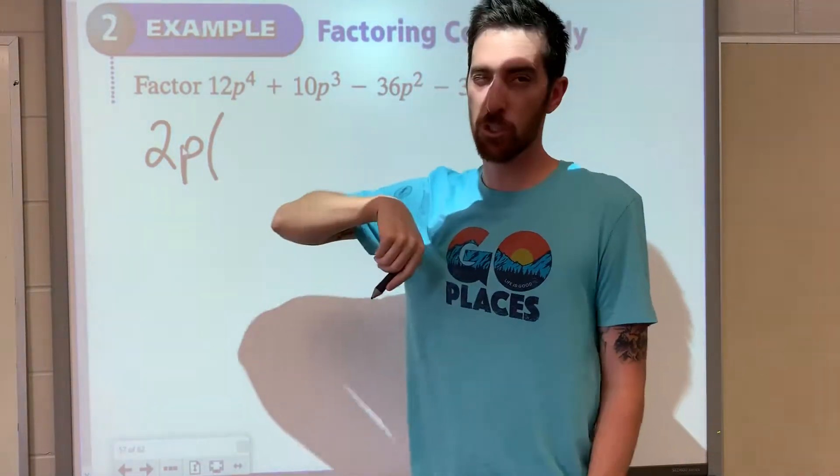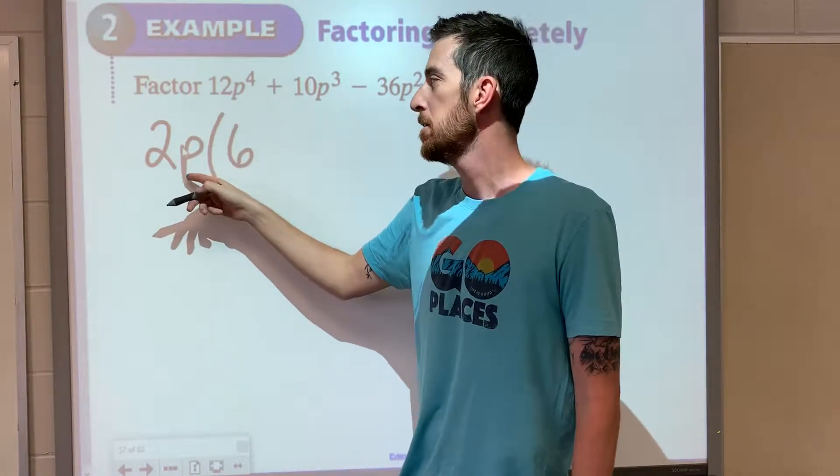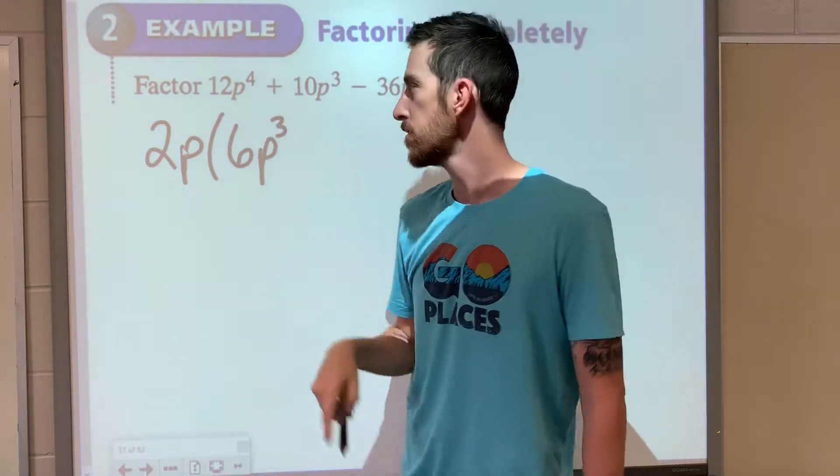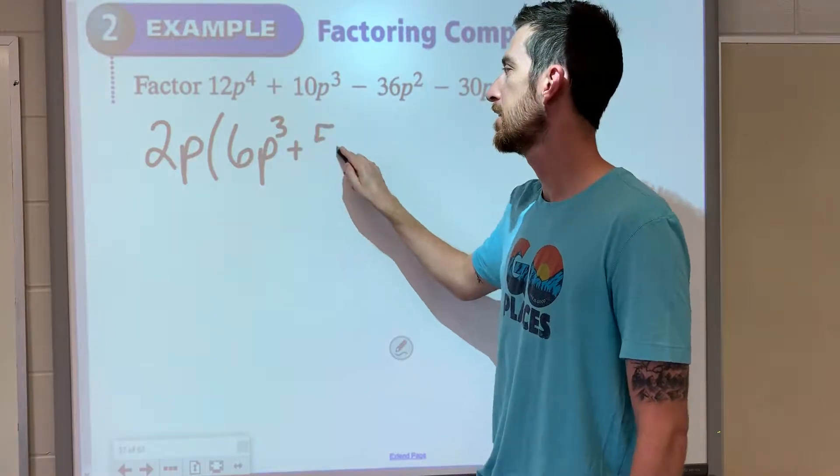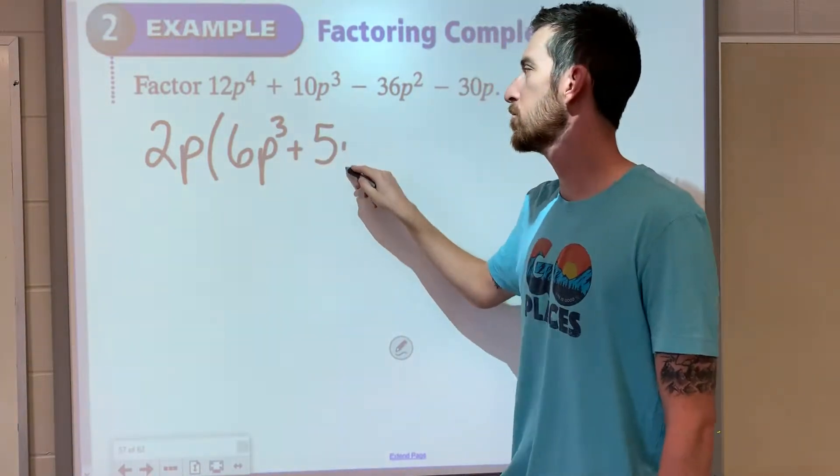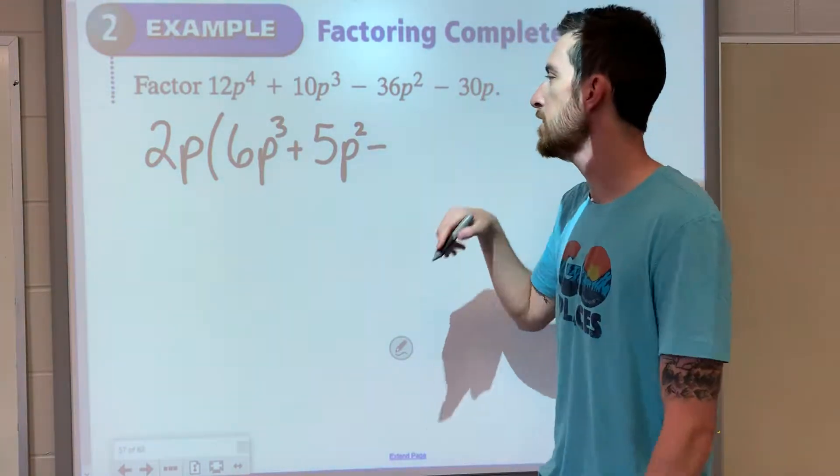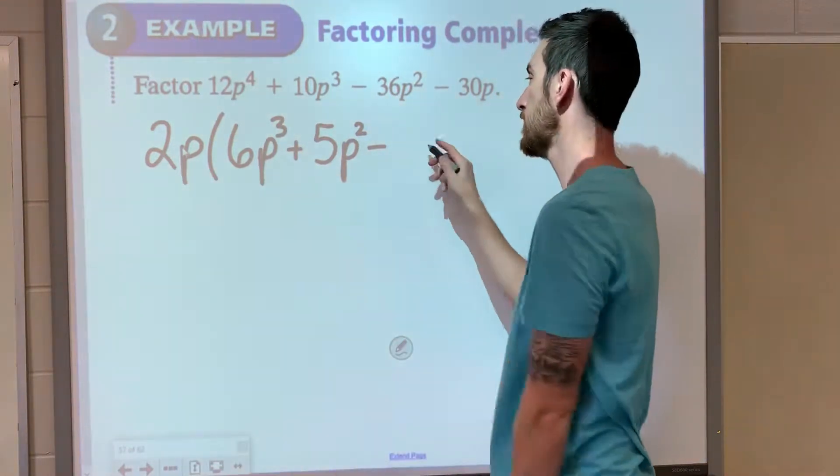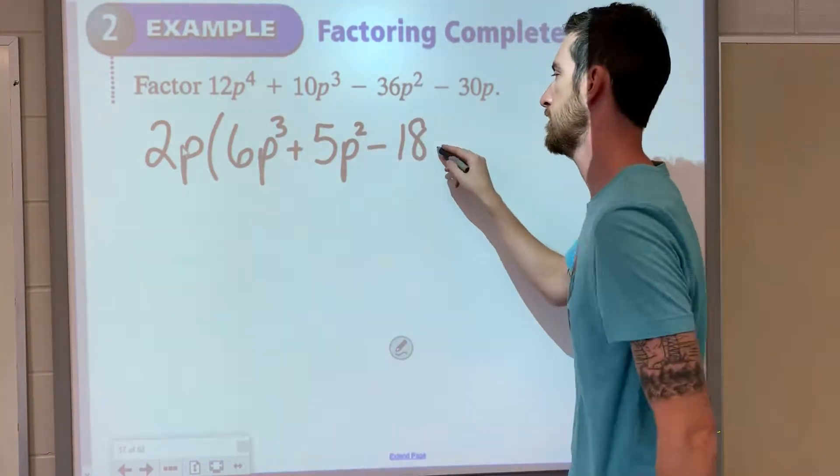2p times what would give us 12p to the 4th? 2 times 6 is 12, p times p to the 3rd would give us p to the 4th. 2 times 5 is 10, p times p squared would be p to the 3rd. Minus, let's see, 2 times 18 gives us 36 and p times p would give us p to the 2nd power.